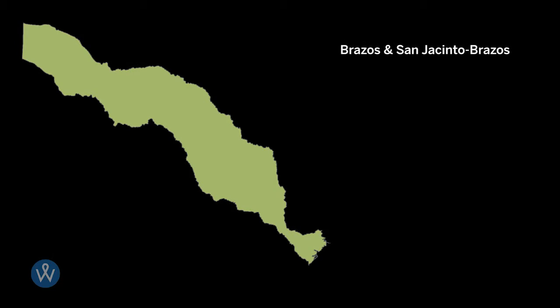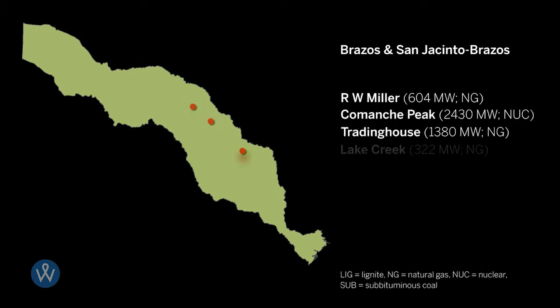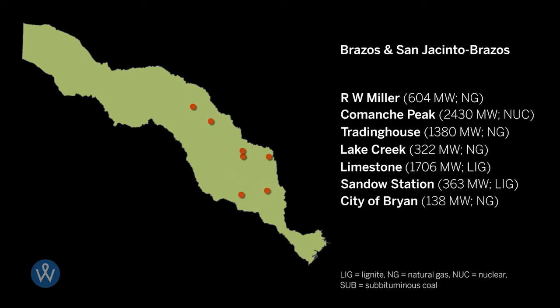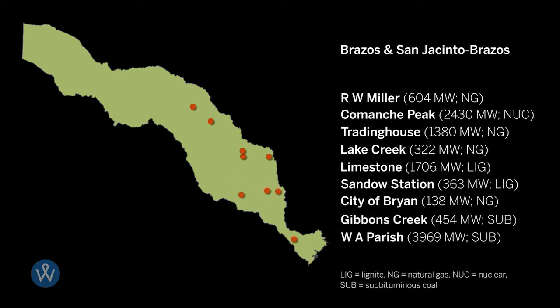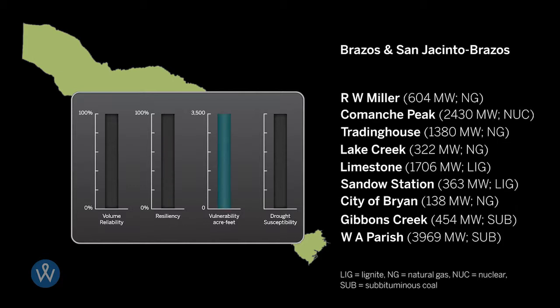The Brazos River Basin is a particularly interesting basin with a range of power plants and water uses. We considered nine power plants in the Brazos Basin and measured reliability, resiliency, and vulnerability in response to changes in reservoir storage. Lower reliability, lower resiliency, and higher vulnerability are associated with higher susceptibility to drought.